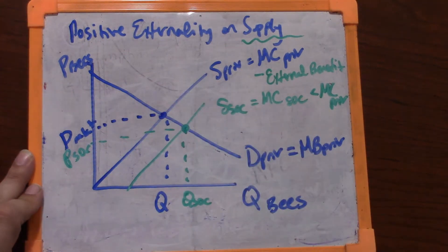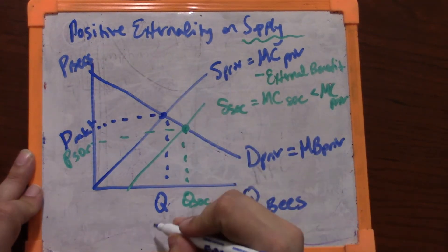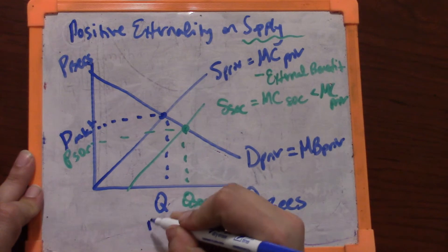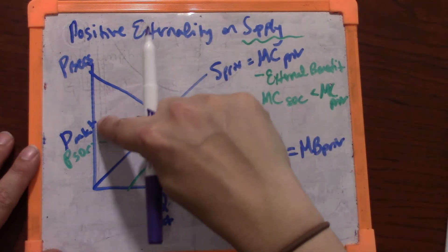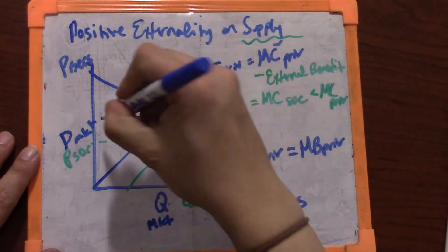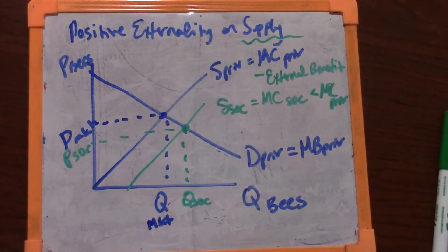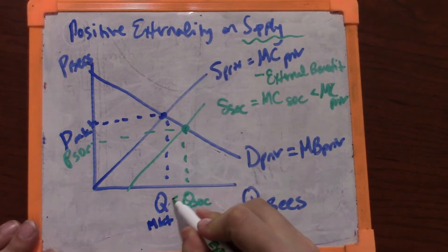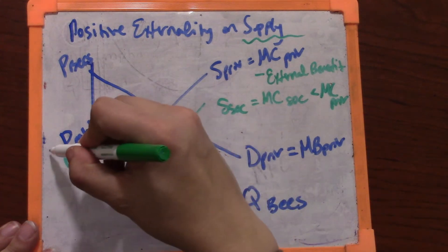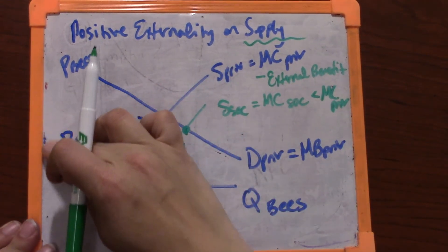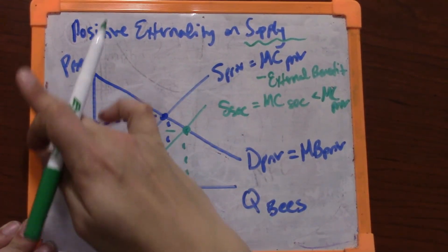And that is simply to incentivize people to purchase that higher quantity of bees. So just to reiterate before we do that, we would predict that the market will provide less bees than is socially optimal, and the market price for bees will be too high relative to what society would like.